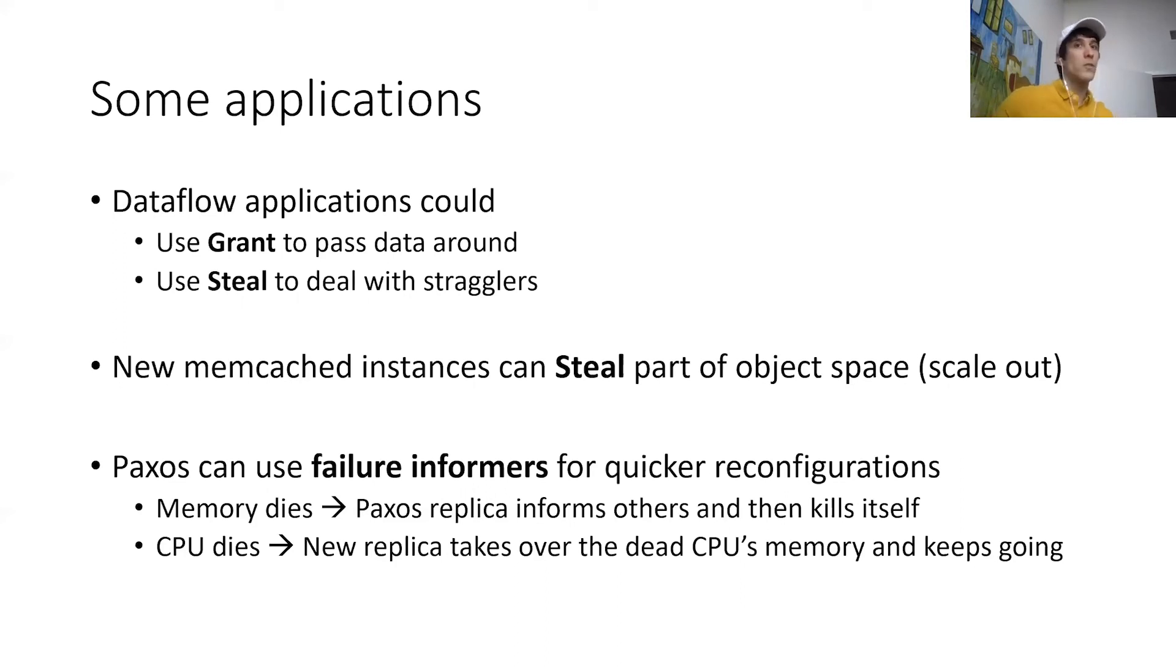These applications can also use steal so that one worker can take over the unfinished task of another, potentially slower worker. So if there's a worker that hasn't made much progress, you can imagine a new worker being spawned, and then that new worker basically steals the memory of the slow worker. Under the assumption that the memory node is not the bottleneck or the element that's slow, then this can improve performance and deal with stragglers. Also, if you have a scale-out system like memcached, what you can do is if there are some objects in the object space that are very hot, you can spawn a new memcached instance.